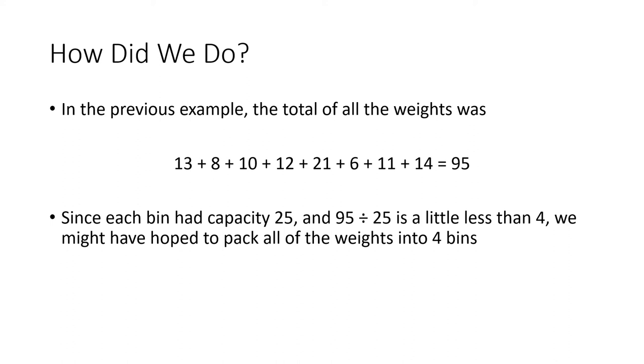So 4 is really the best we could have done. We could not have gotten this into three bins of capacity 25 because three times 25 is only 75, and that's not enough. We need room for 95 total weights, so three bins is not enough. Four bins was theoretically possible based on this division problem, and in fact we were able to pack those weights into four bins.